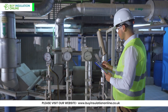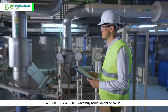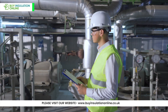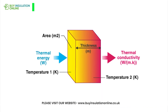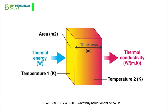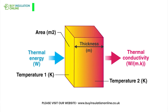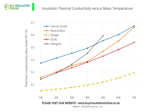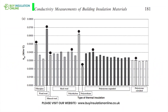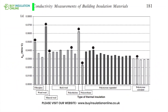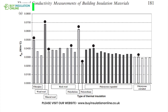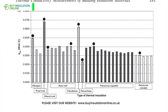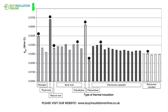When determining the right pipe insulation thickness for a project, several factors must be taken into account. The thermal conductivity of the insulation is known as the lambda or the k value, and is expressed in watts per metre kelvin. The k value is a measure of the thermal conductivity of an insulation material — it is a ratio of the rate of heat transfer through the material to the temperature difference on either side of it. The lower the k value, the better the insulation material is at preventing heat transfer.